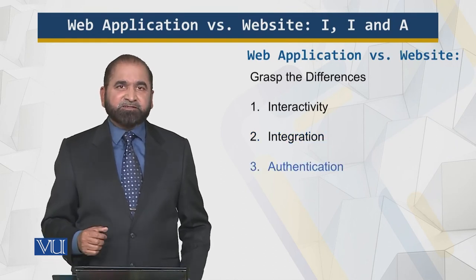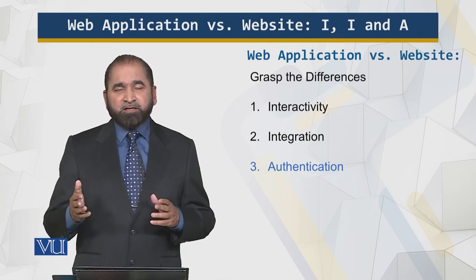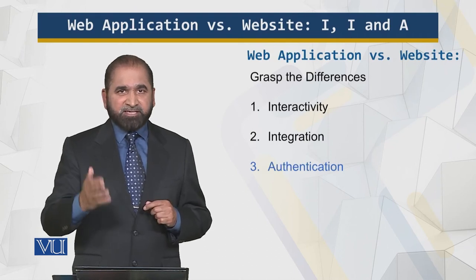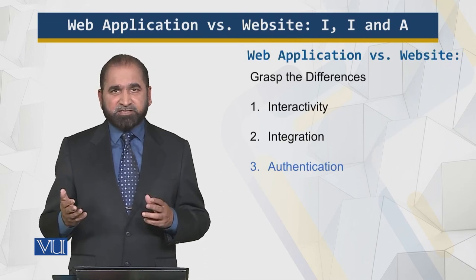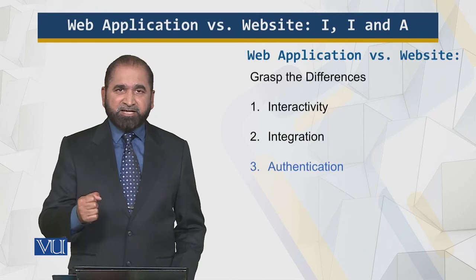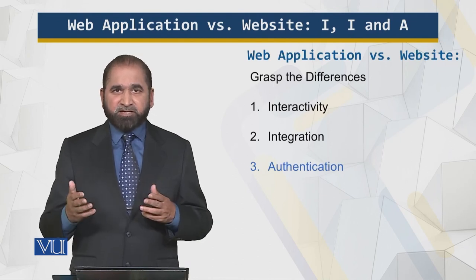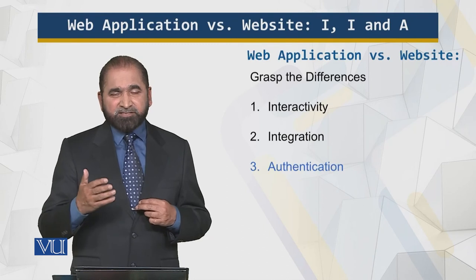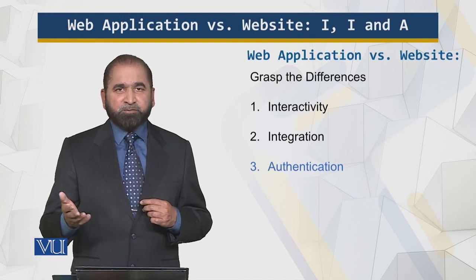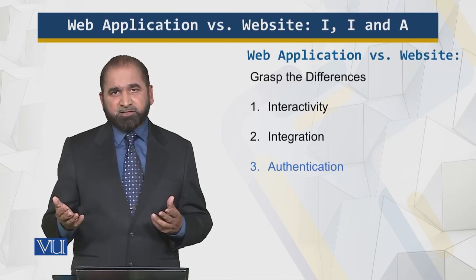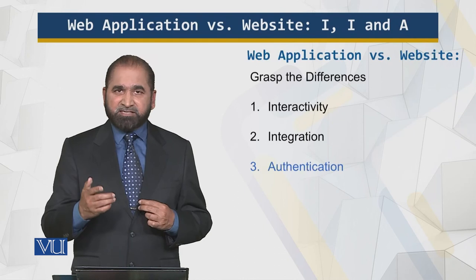The third aspect is authentication, which means logging in with a username and password to access personal information. Authentication protects that information from others, including those with malicious intent. When creating a password, the system advises making it secure and robust so hackers cannot break in. If you have social networks or email accounts, that personal information must be protected — that is authentication.